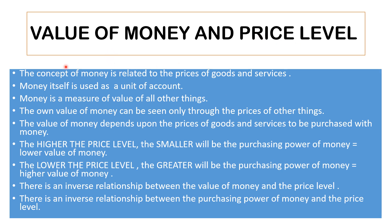We will now talk about the value of money and the price level. The concept of money is correlated to the prices of goods and services. Money itself is used as a unit of account — just as you measure height in centimeters or inches, money is used as a measure of value of all other things. You can measure tomatoes, jewelry, and a house all in terms of money. The own value of money can be seen only through the prices of other things. It depends upon the prices of goods and services to be purchased with money.